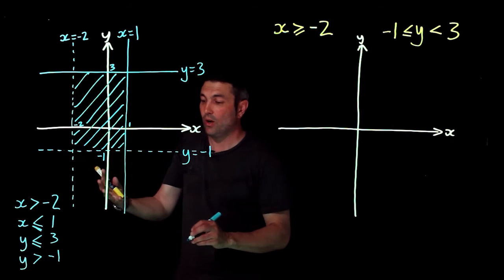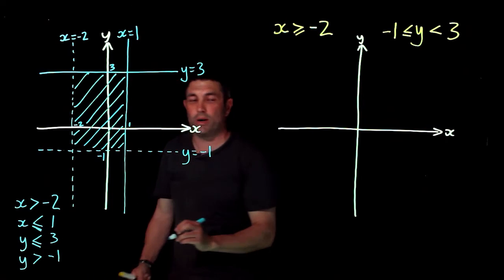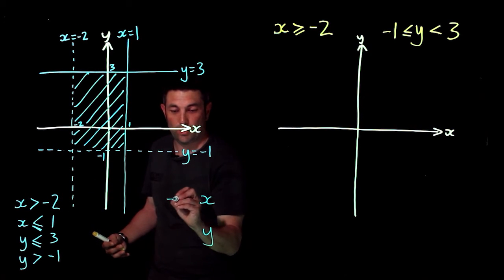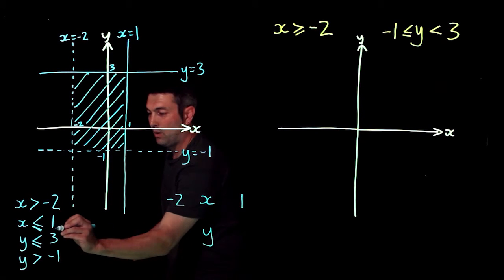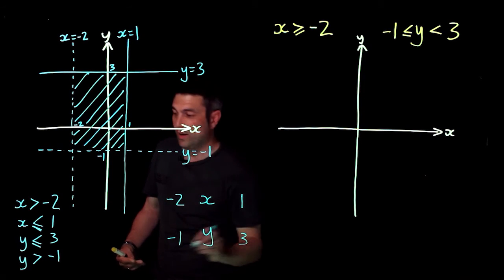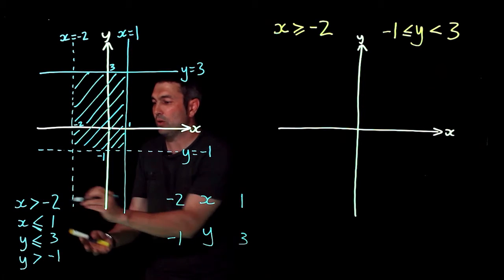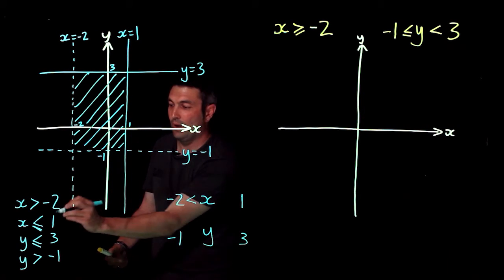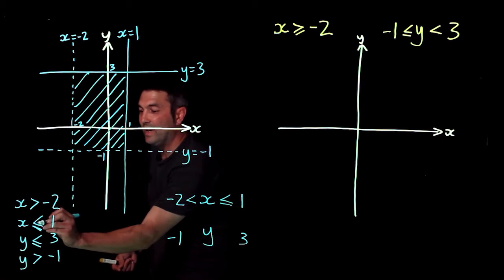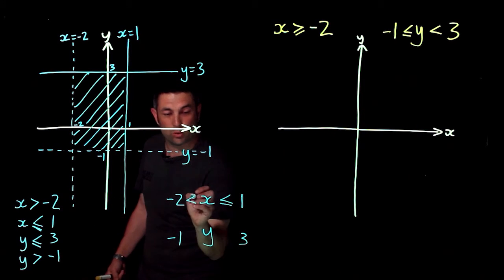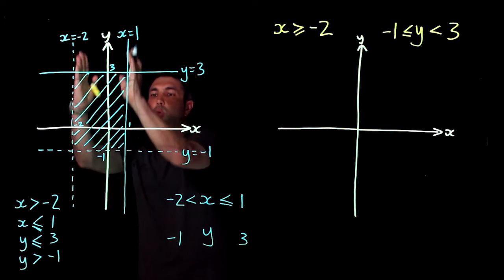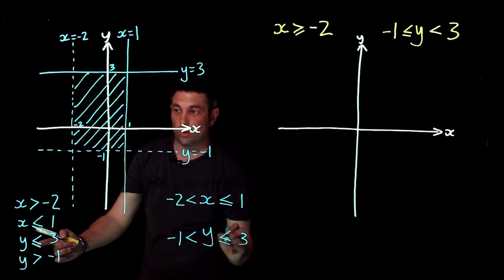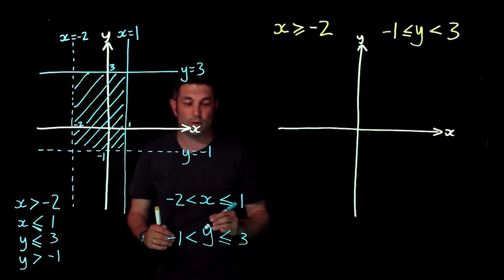To complete the question, combine the two x inequalities and the two y inequalities. Write x and y, placing the lowest numbers first: minus two and one for x, minus one and three for y. Because x is greater than minus two, the inequality flips to place minus two on the left. The result is minus two is less than x, which is less than or equal to one, and minus one is less than y, which is less than or equal to three. This shows the shaded bit lies between those pairs of lines.